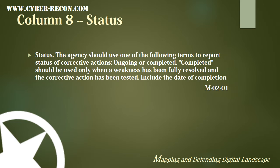Column 8 will identify the status of the finding. The agency should use one of the following terms to report the status of corrective actions: ongoing or completed. Completed should be used only when the weakness has been fully resolved and the corrective action has been tested. This should also include the date of completion.